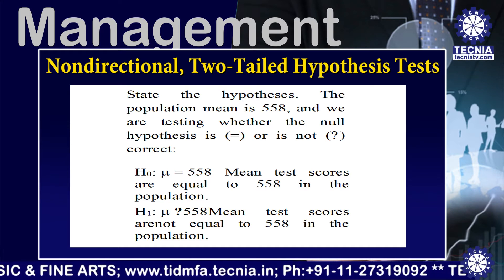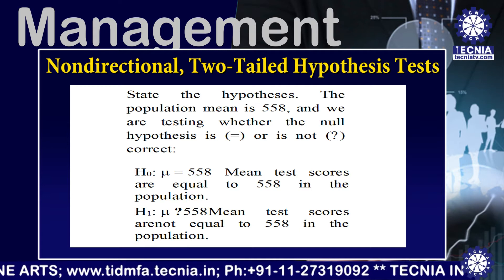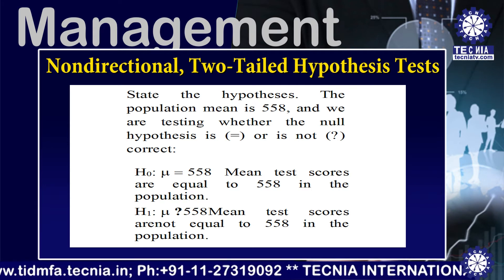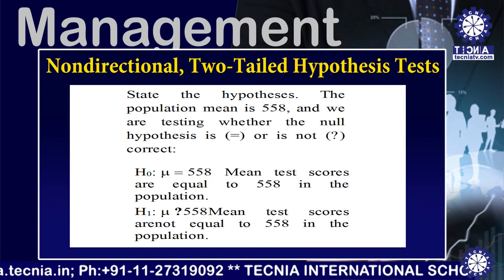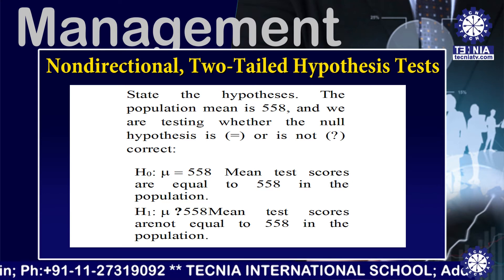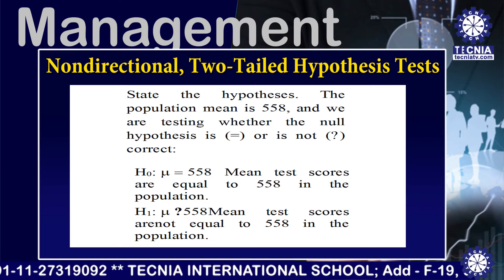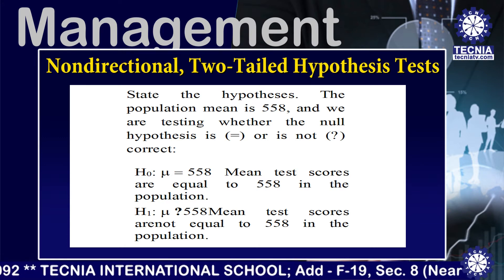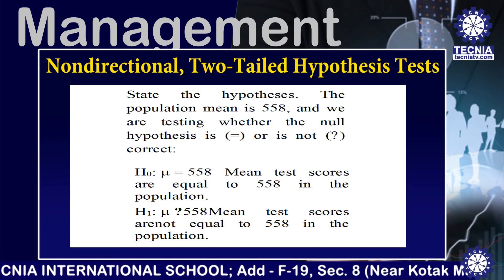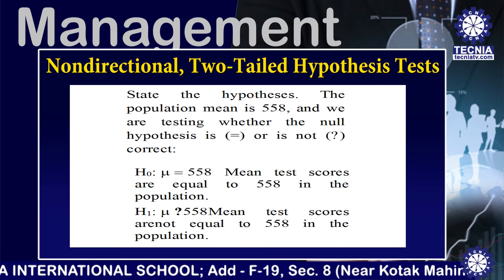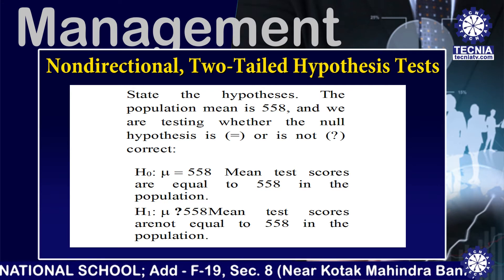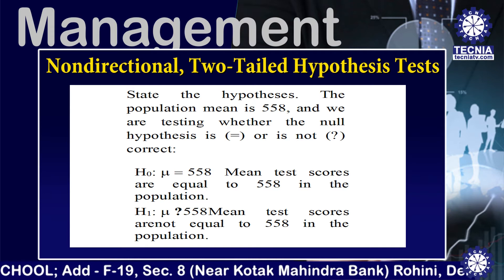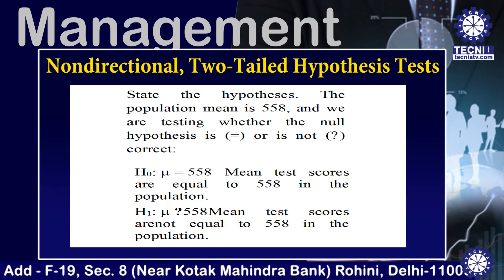Null hypothesis H0: mu = 558, meaning mean test scores are equal to 558 in the population. Alternative hypothesis H1: mu ≠ 558, meaning the mean test score is not equal to 558 in the population.